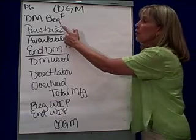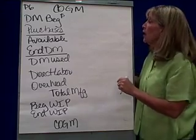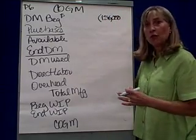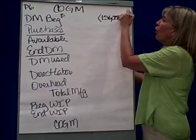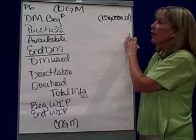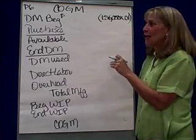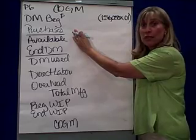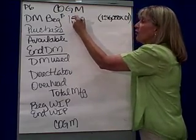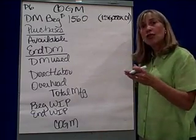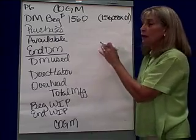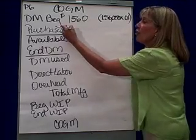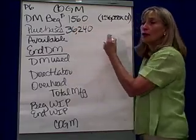Direct materials had a beginning inventory of 156,000 ounces. From the materials budget, each of those ounces costs a penny a piece. For the cost of goods manufactured, it's not the ounces — it's the cost. So 156,000 times a penny means the value of the direct materials beginning inventory is $1,560. Looking at the direct materials budget for water, the bottom line says we need to purchase $36,240 of water.